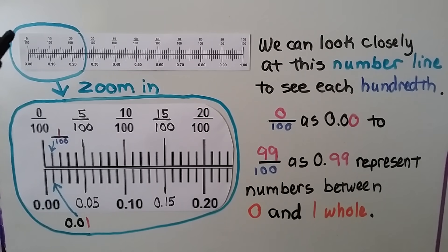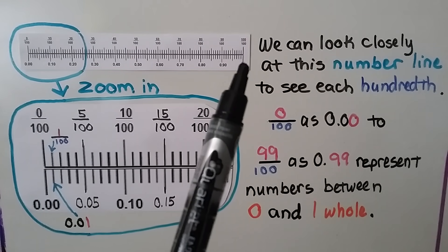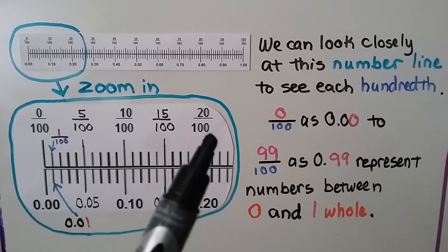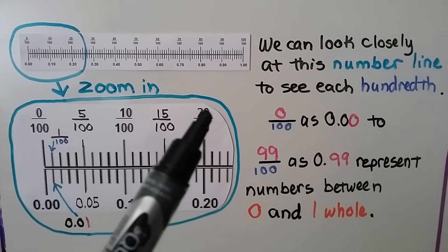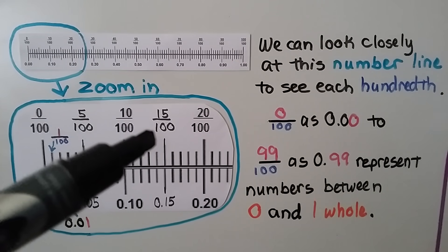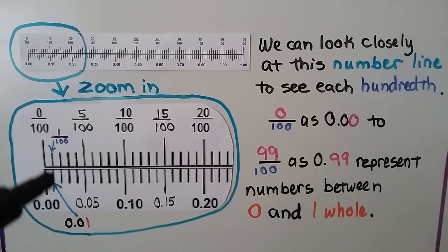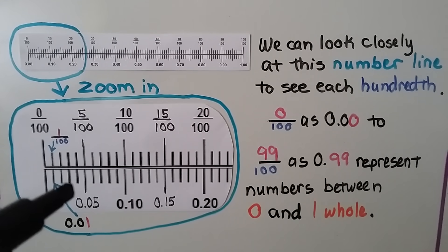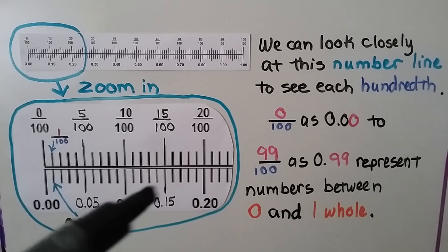Here we have a number line that goes from 0 hundredths to 100 hundredths. We can look closely at this number line to see each hundredth. If we zoom in to this area, we have 0 hundredths up to 20 hundredths, and we can see all the little tick marks in between — 5 hundredths, 10 hundredths, 15 hundredths. This little mark right here is 1 hundredth, written as a decimal 0.01 and as a fraction one hundredth. So that would be 2 hundredths, 3 hundredths, 4 hundredths, 5 hundredths, and we can keep going.